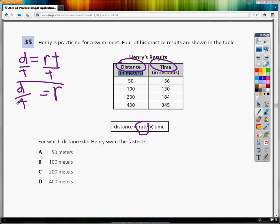For each one of these practice results, I'm going to do distance divided by time. The first one would be 50 divided by 56, then 100 divided by 130, then 200 divided by 184, and then 400 divided by 345.